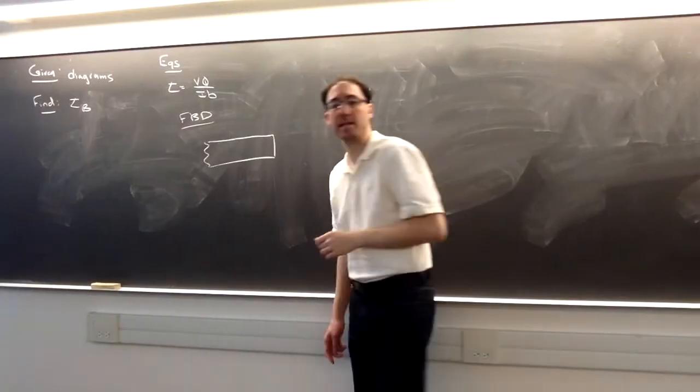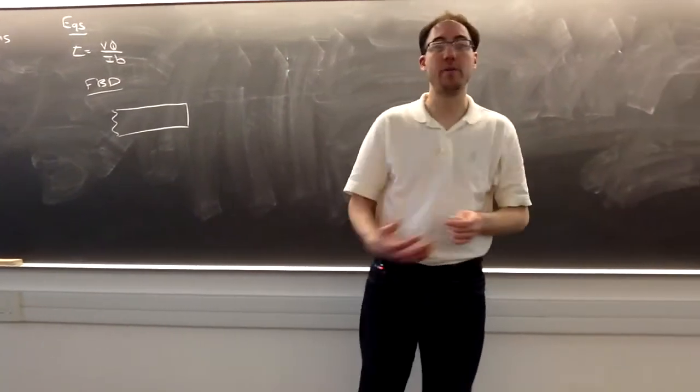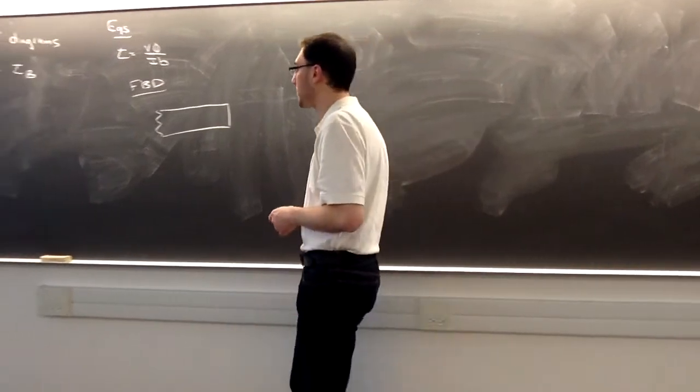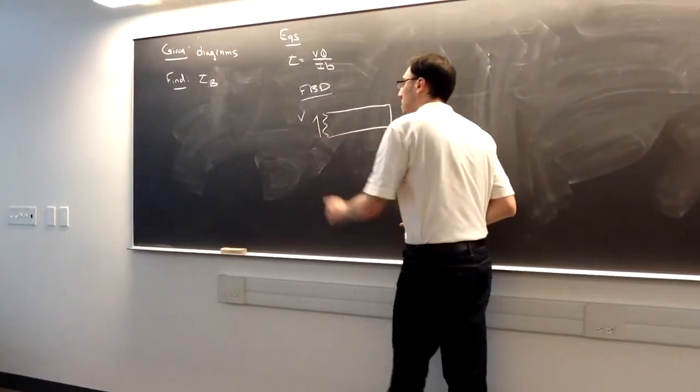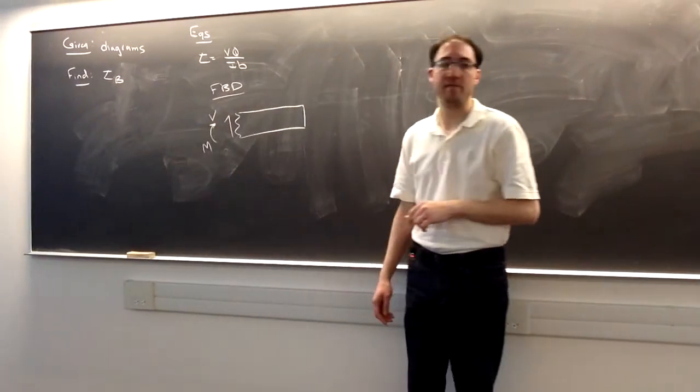Because it's cantilevered, the easiest thing to do here is going to be making a cut and taking everything to the right. I don't need to find those wall reactions. At that cut, there'll be a V and an M.